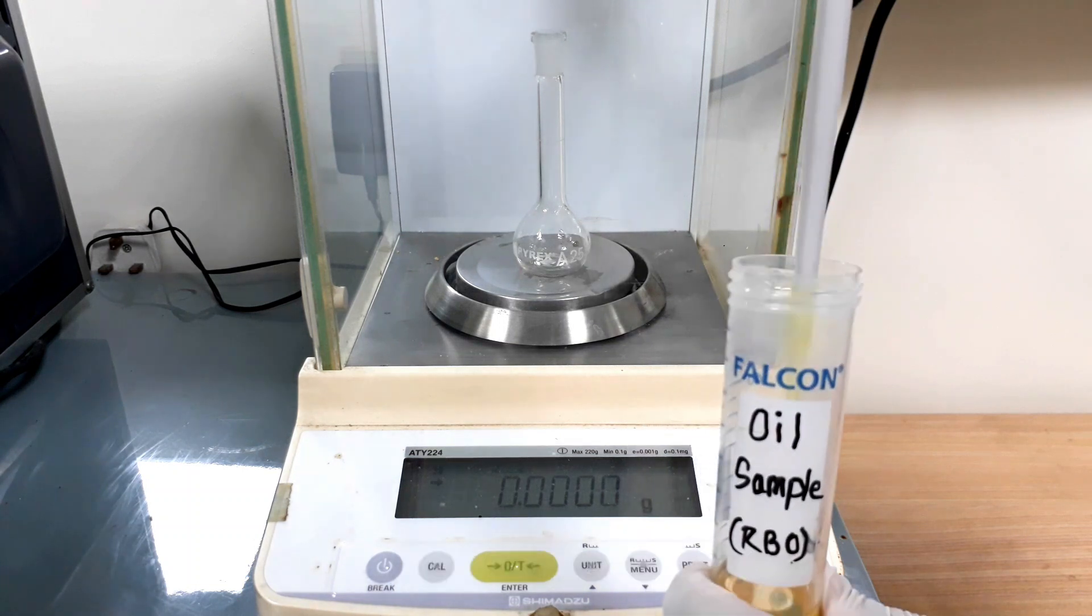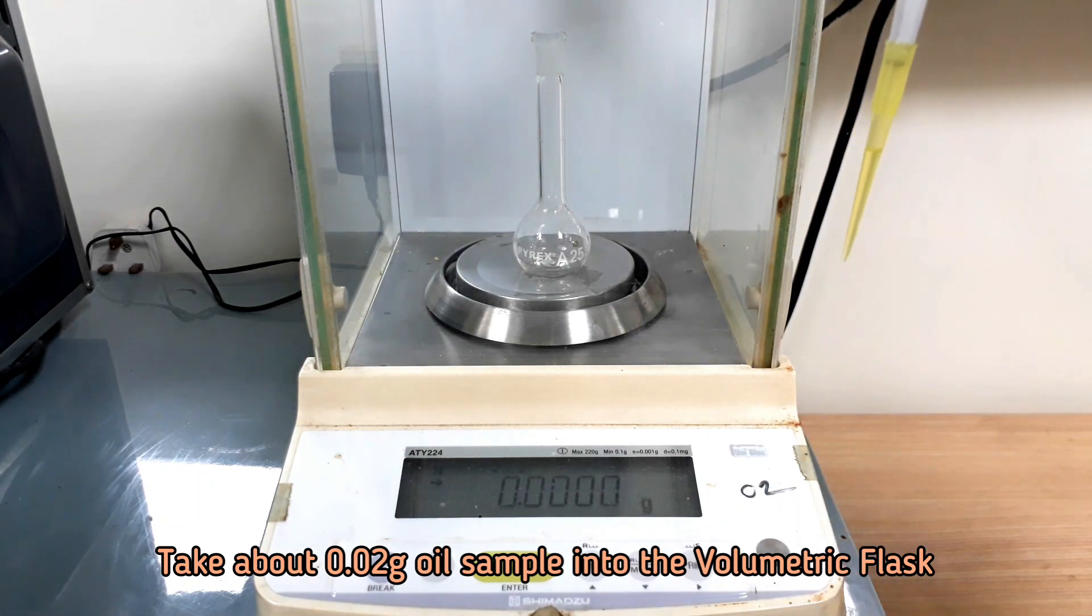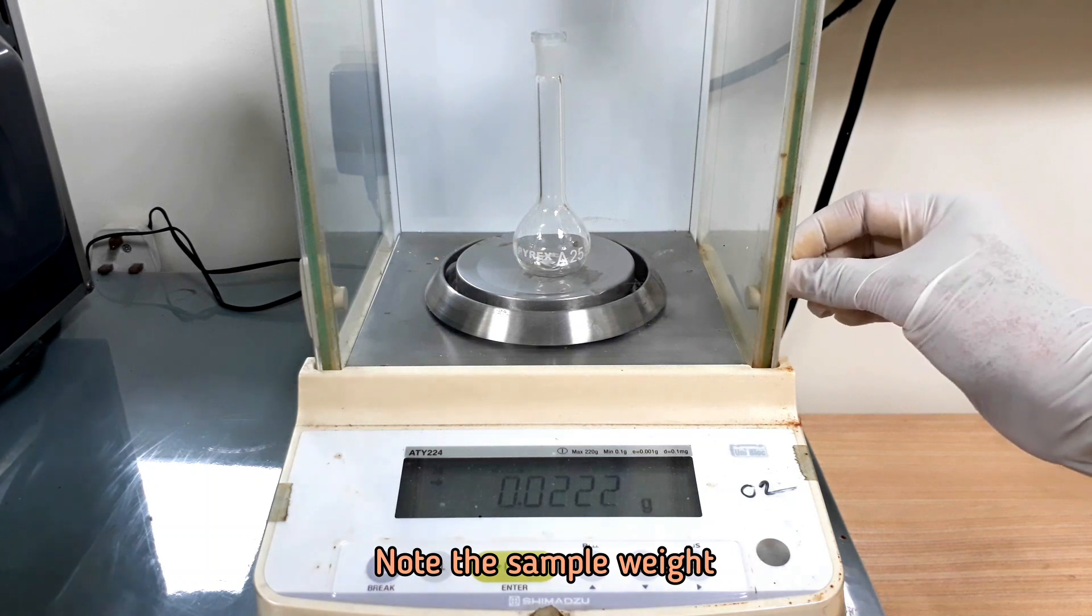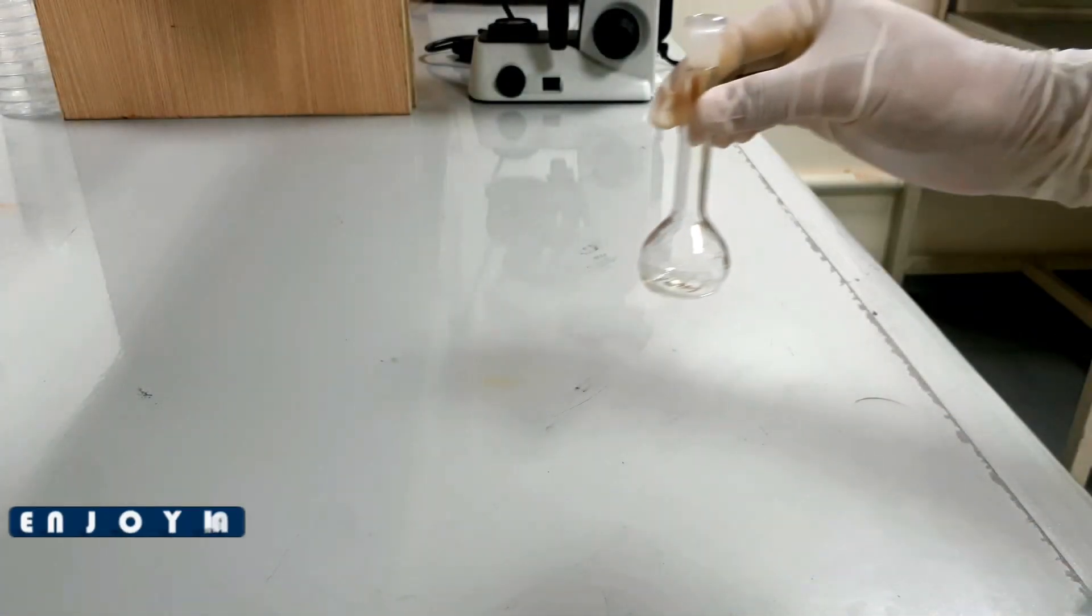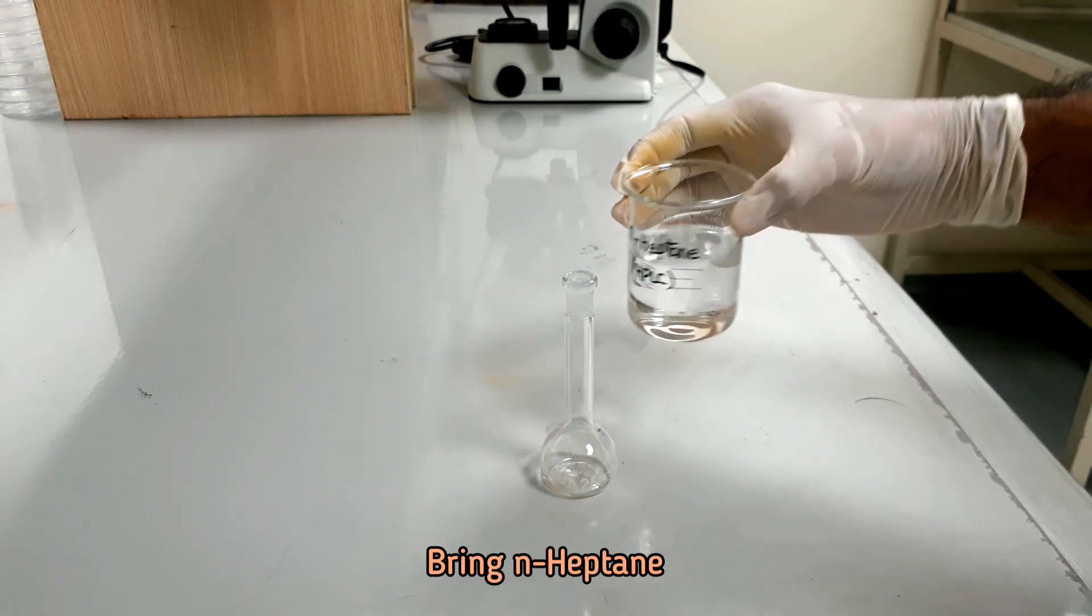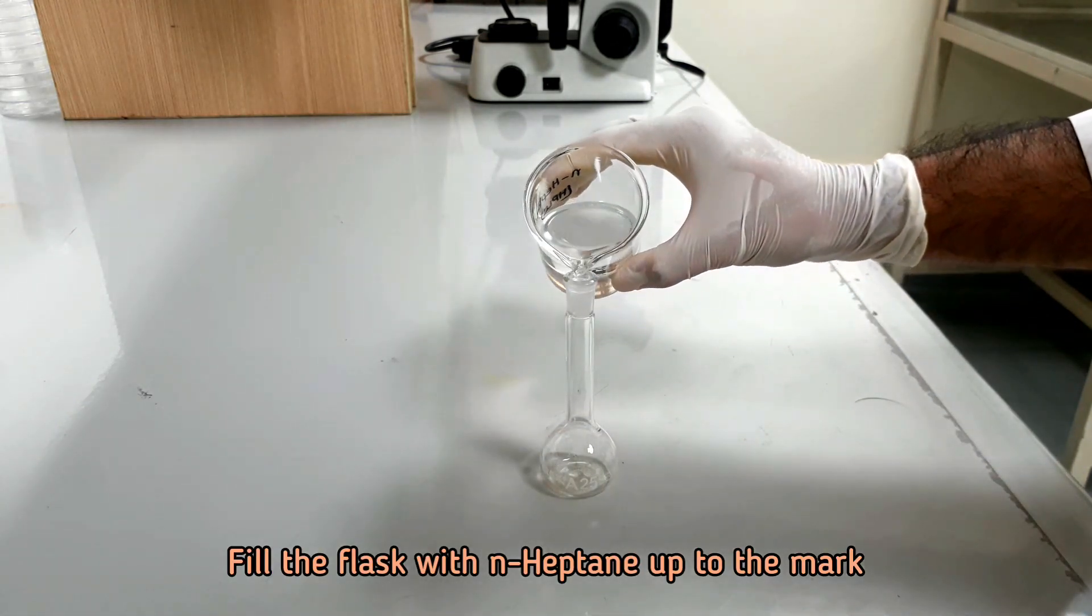Take about 0.02 gram of oil sample into a 25 ml volumetric flask. Note the sample weight. Now fill the flask with n-heptane up to the mark.